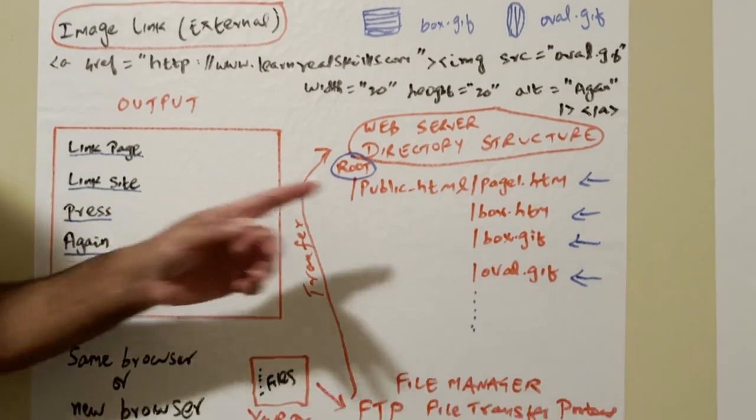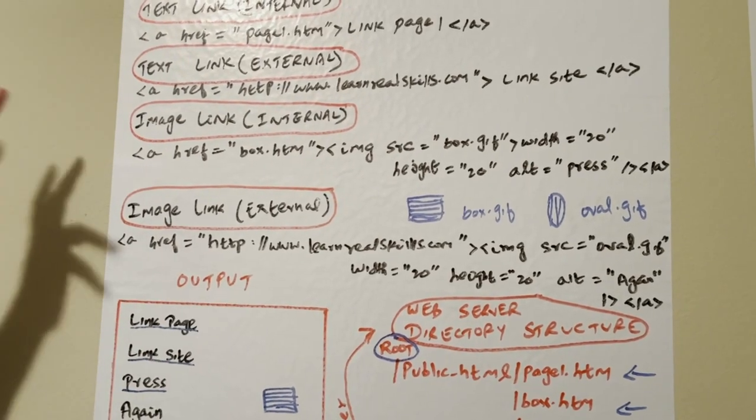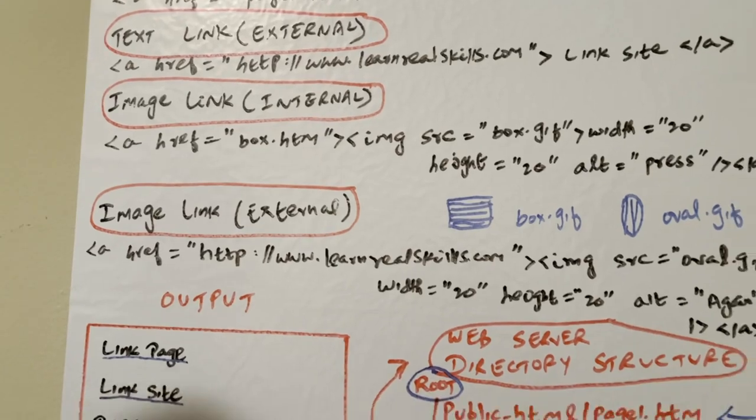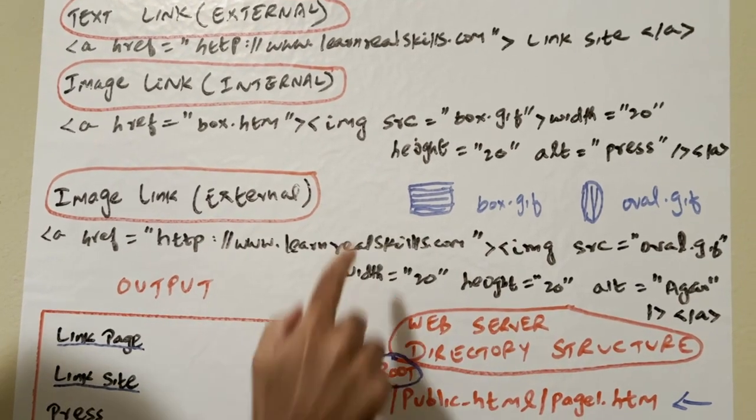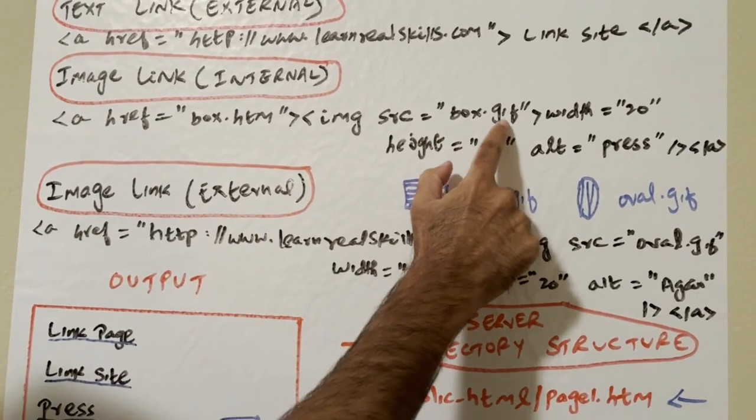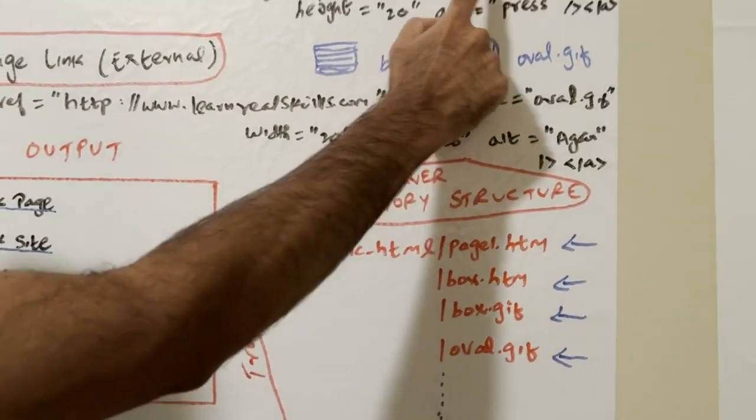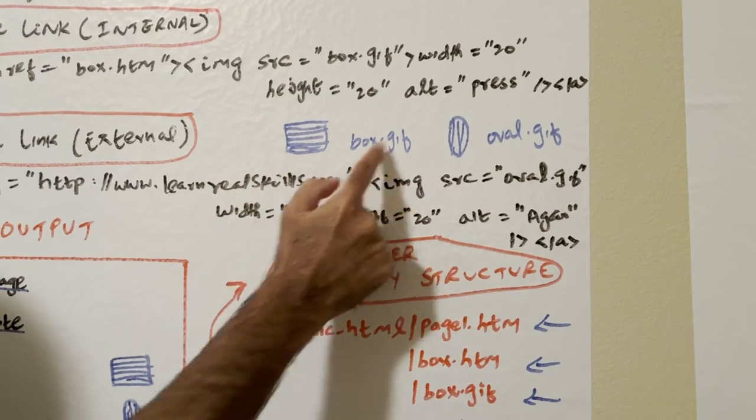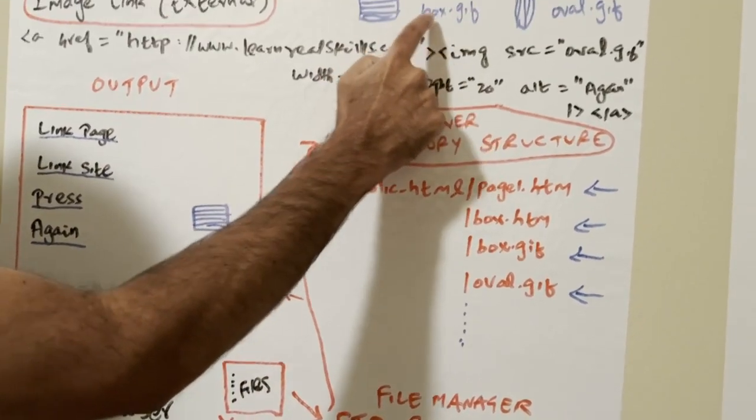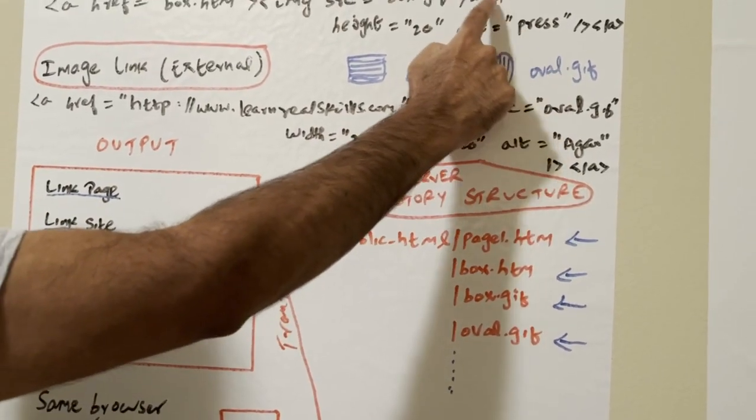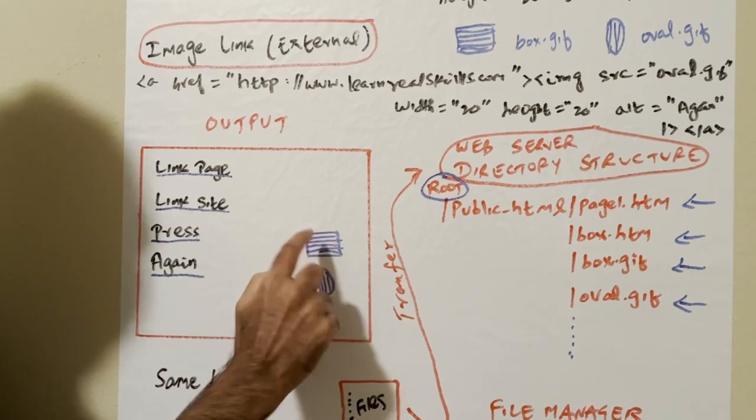These two are text links, internal, external. Now there's images. Image link internal means box.htm is right here. Image src is A tag, source tag, image IMG box.gif in this website. So box.gif is here. Width is 20, height is 20. This is the actual file that is on your computer. You transferred using FTP, all these files. Now they are sitting here. So box.gif, oval.gif, height and width of 20, 20. When you press this, this box will appear. It fetches the image from the directory.